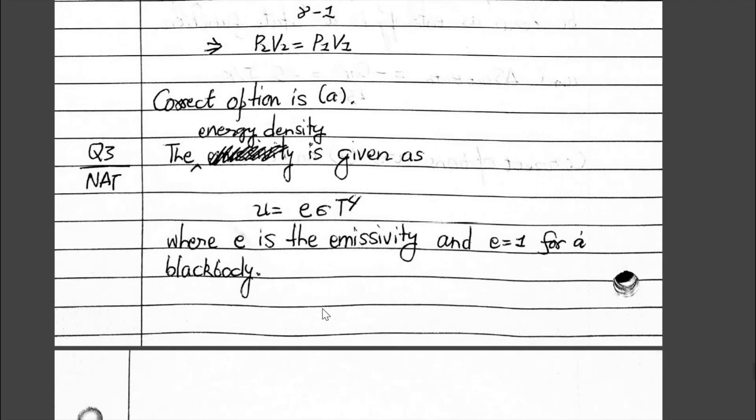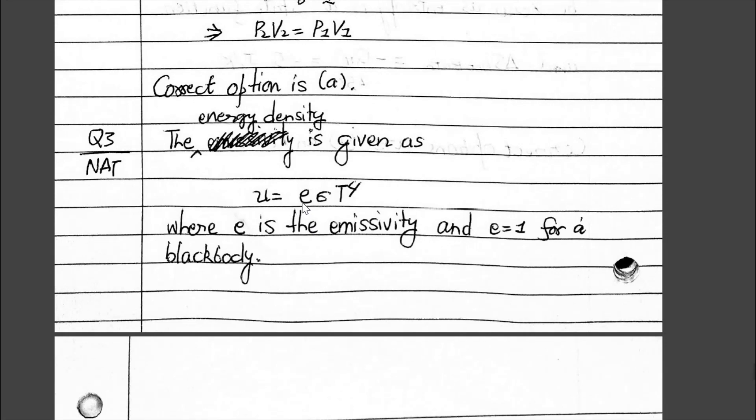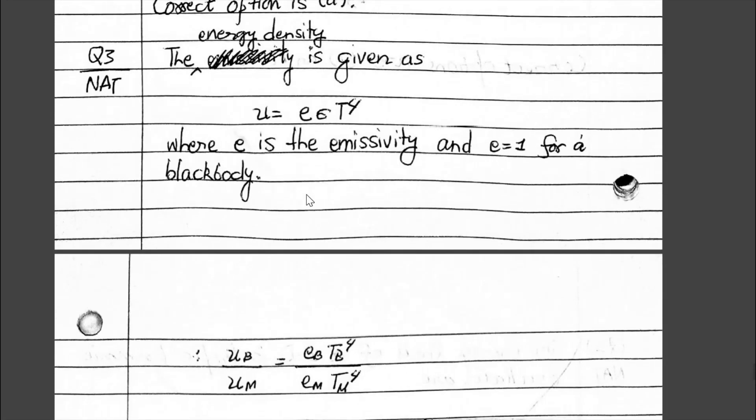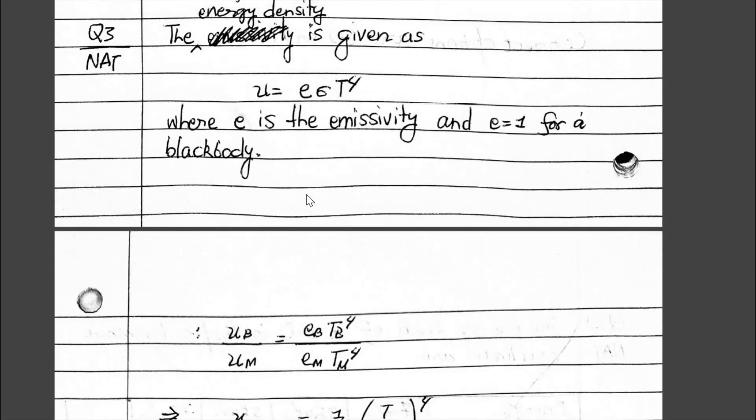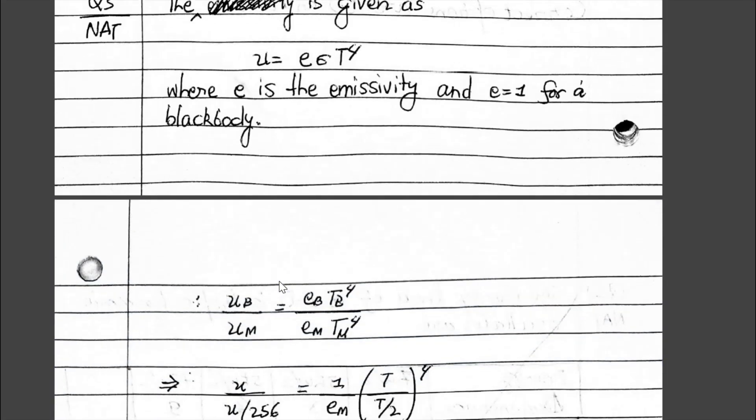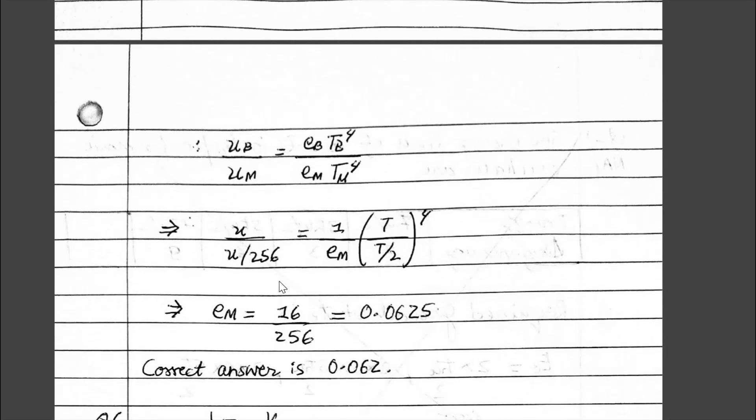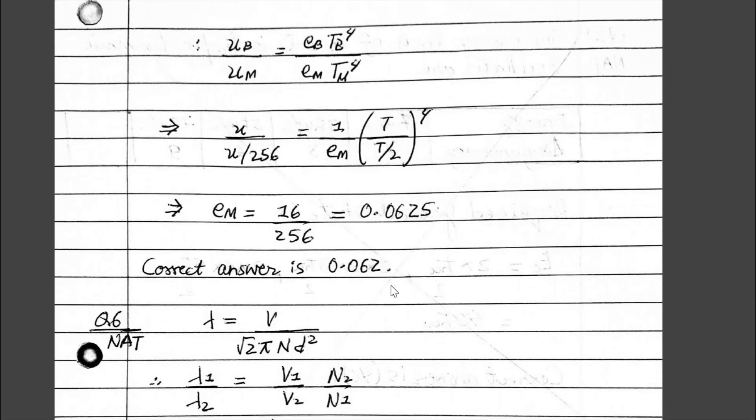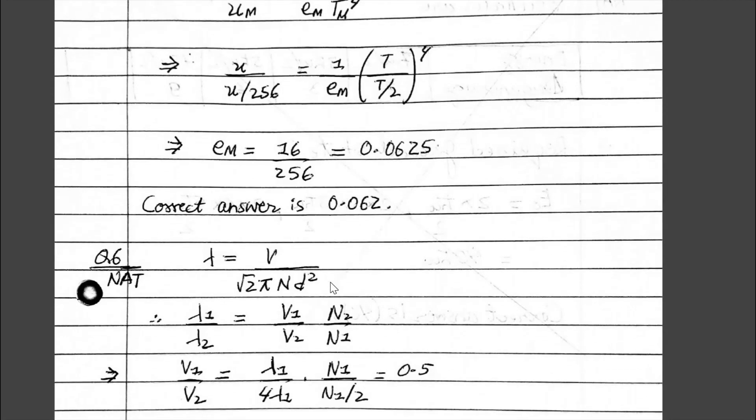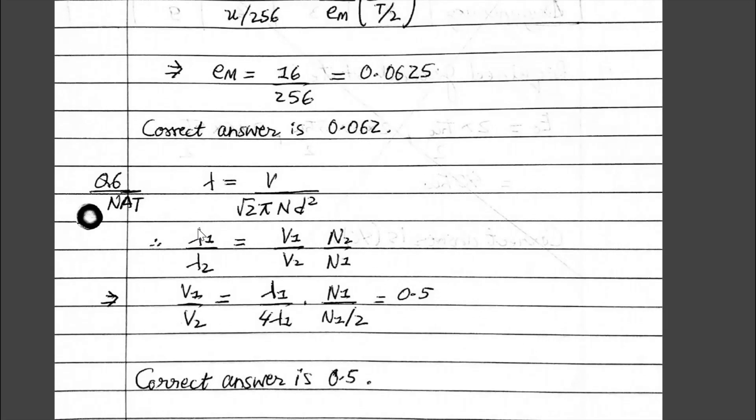Then NAT question number 3. This is from blackbody radiation. We need to find E of the material. You can see, you can do the calculation this way. The correct answer is 0.062.